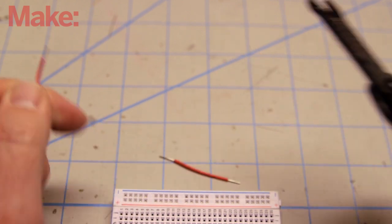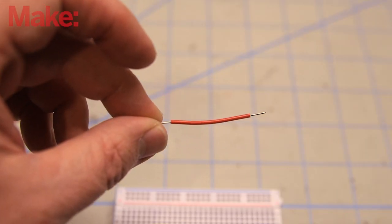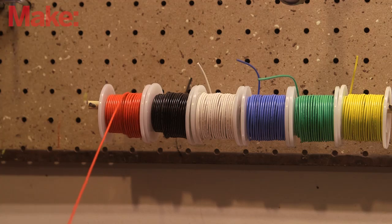Instead of cutting the wire first and then trimming the insulation, I trim the insulation and then cut the wire.